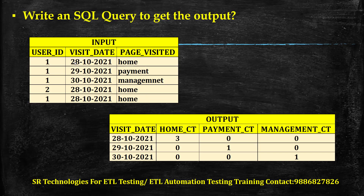If you observe, on the 28th, the home page was visited three times. But for the 28th, there are no payment page visits and no management page visits, so we should see zero and zero there. When it comes to the 29th, there is one payment page visit. And for the 30th, only the management page was visited.